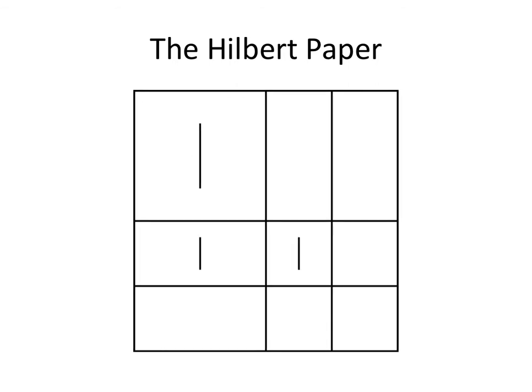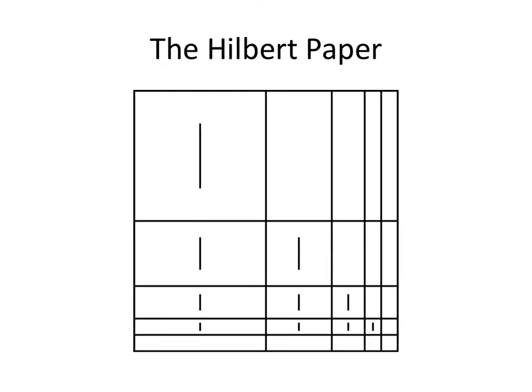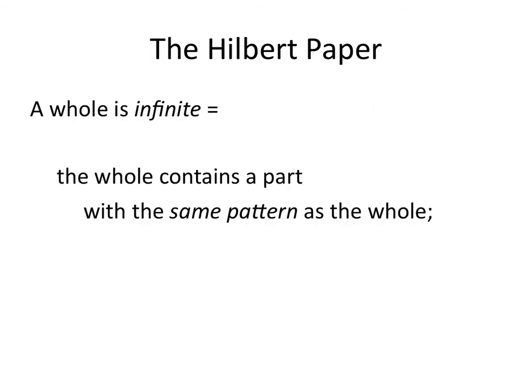So we divide vertically, divide in half horizontally, and write the number two. We're writing smaller and smaller and faster and faster. Divide again, divide again, write the number three. Divide again, divide again, write the number four. If you accelerate doing every one of these operations twice as fast, you will have, in one minute, an infinite piece of paper — a piece of paper with infinitely many numbers on it.